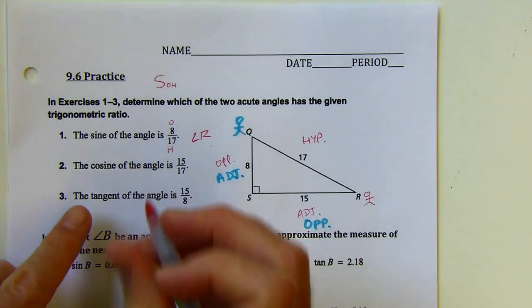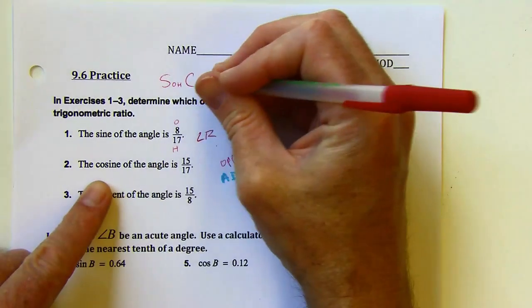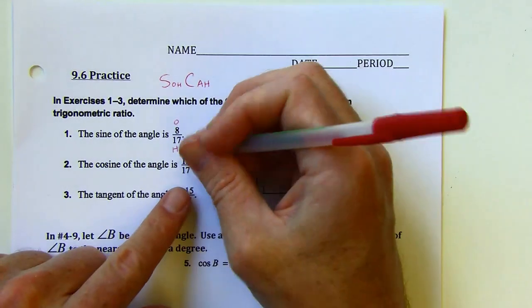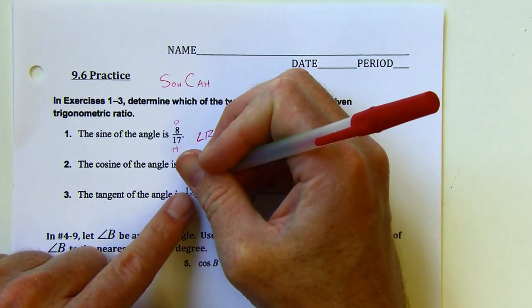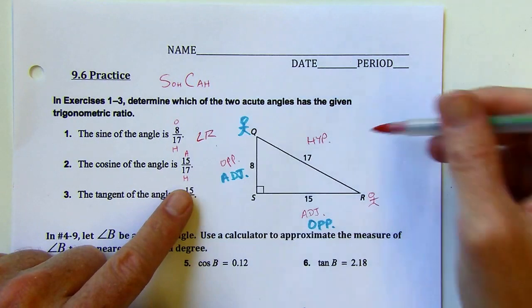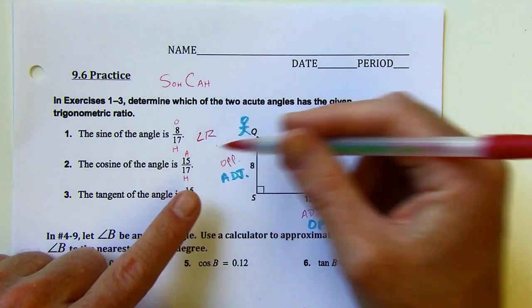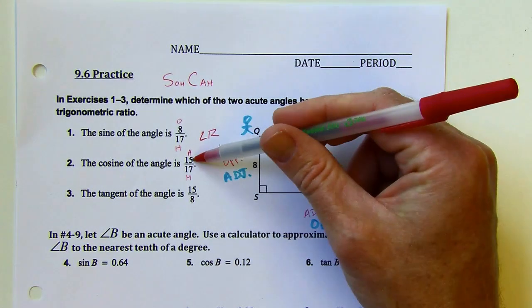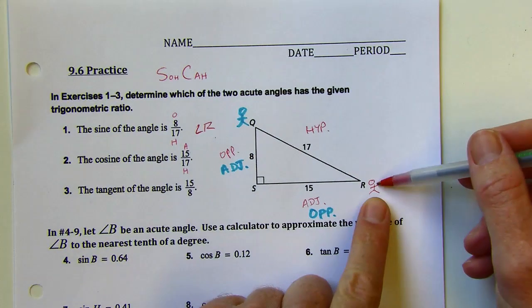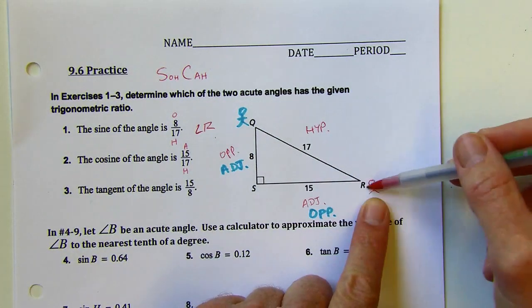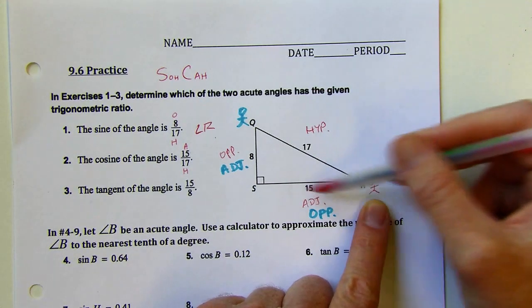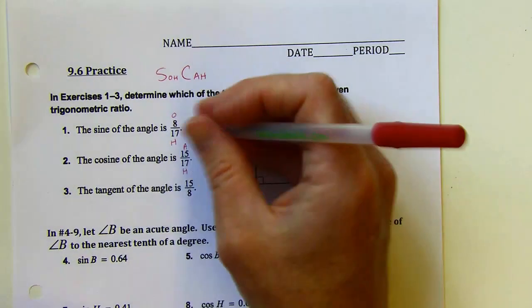Next one — cosine. Cosine is the CA part of SOHCAHTOA, so that's adjacent over hypotenuse. The hypotenuse is always 17, but I want to think about when the adjacent leg is going to be 15. If I'm over at angle R, then the adjacent leg is 15 — that's the leg next to me. So this would be angle R again.